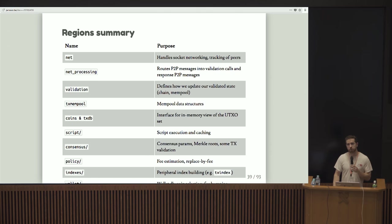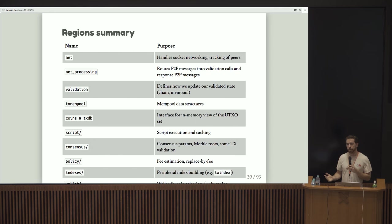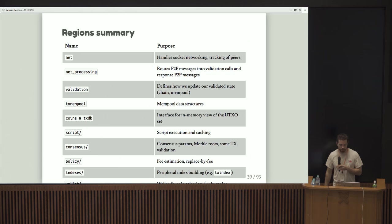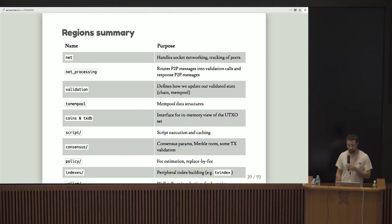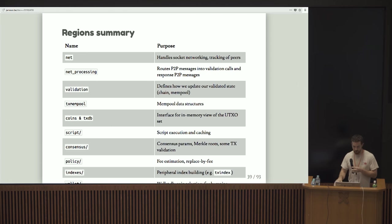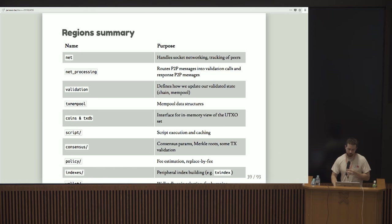TxMemPool defines the mempool data structure — basically where unconfirmed transactions hang out. Coins and TxDB define a view on the UTXO set, the unspent transaction output set — that's where a lot of the performance bottlenecks in Bitcoin come in. Script defines script execution and caching. Consensus is kind of weirdly named; it contains a few consensus params, things like how to calculate Merkle routes and some transaction validation. Policy is for fee estimation and replace-by-fee. Index is for peripheral index building like TxIndex. And wallet handles wallet DB and coin selection as well as fee bumping.